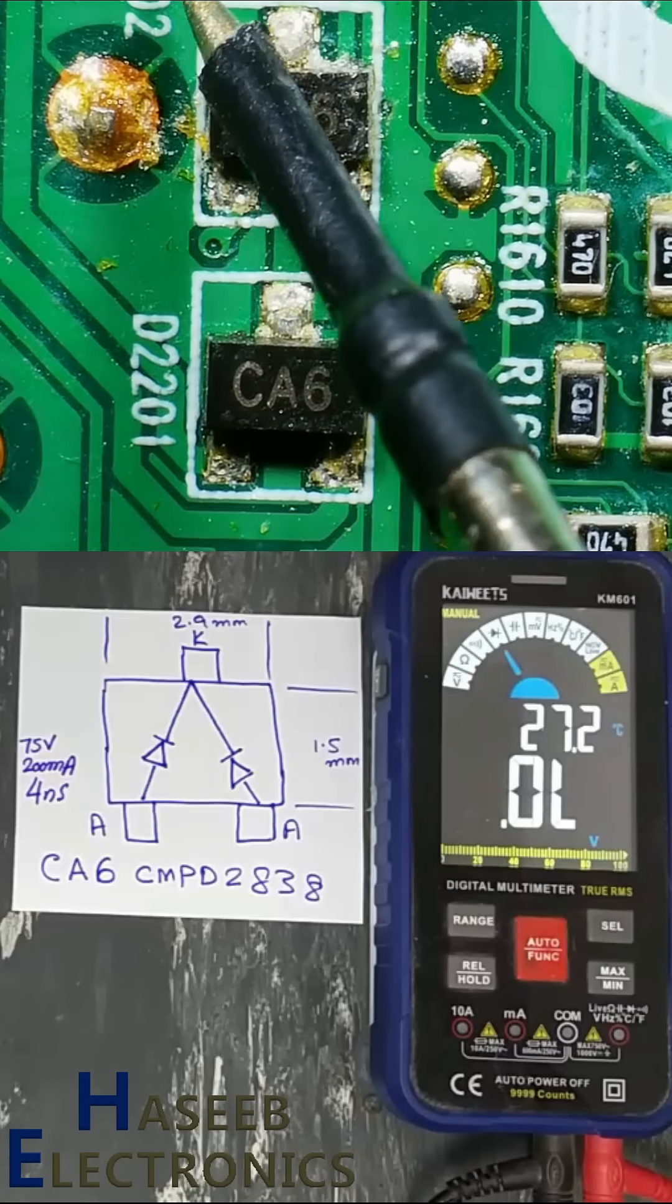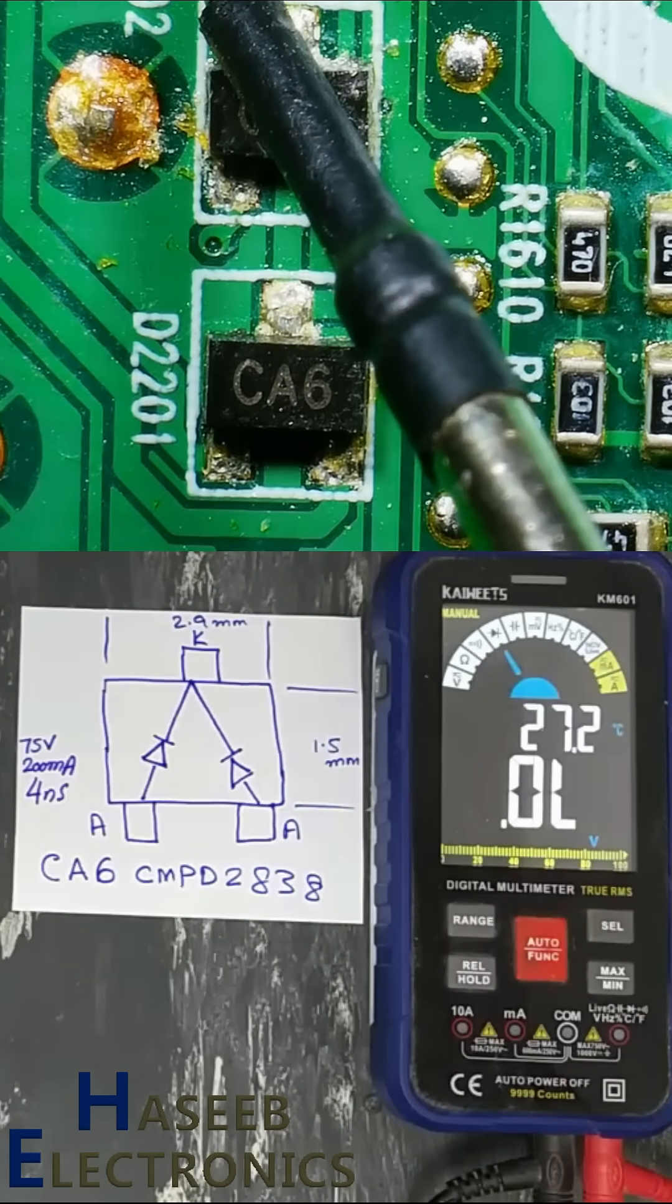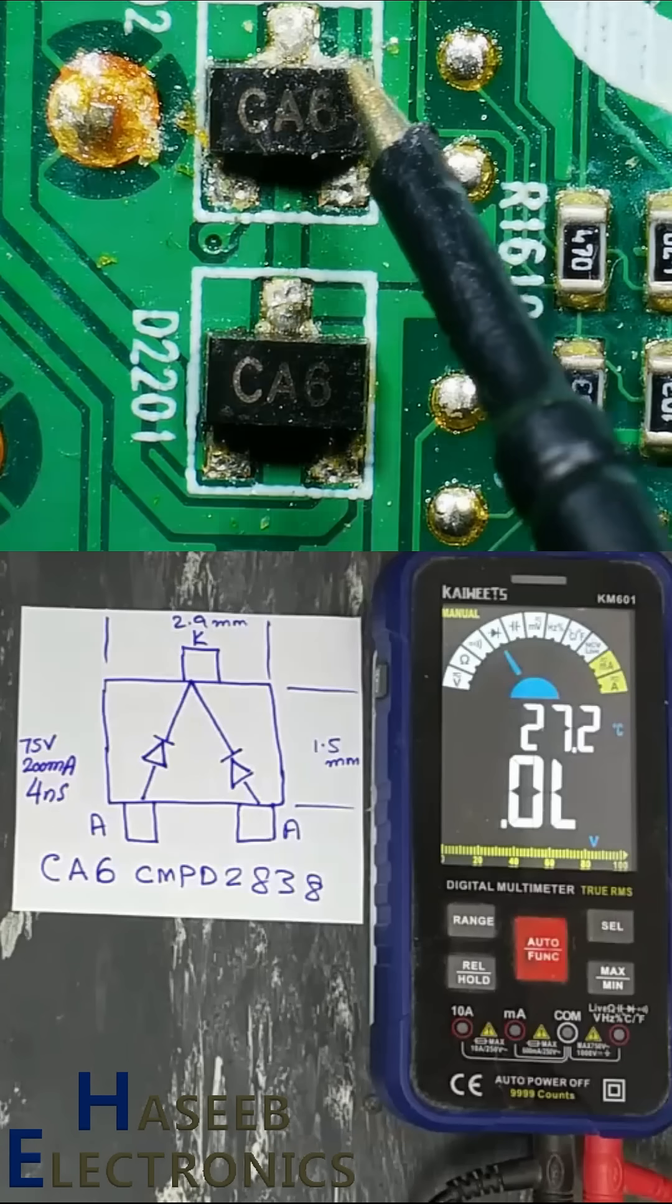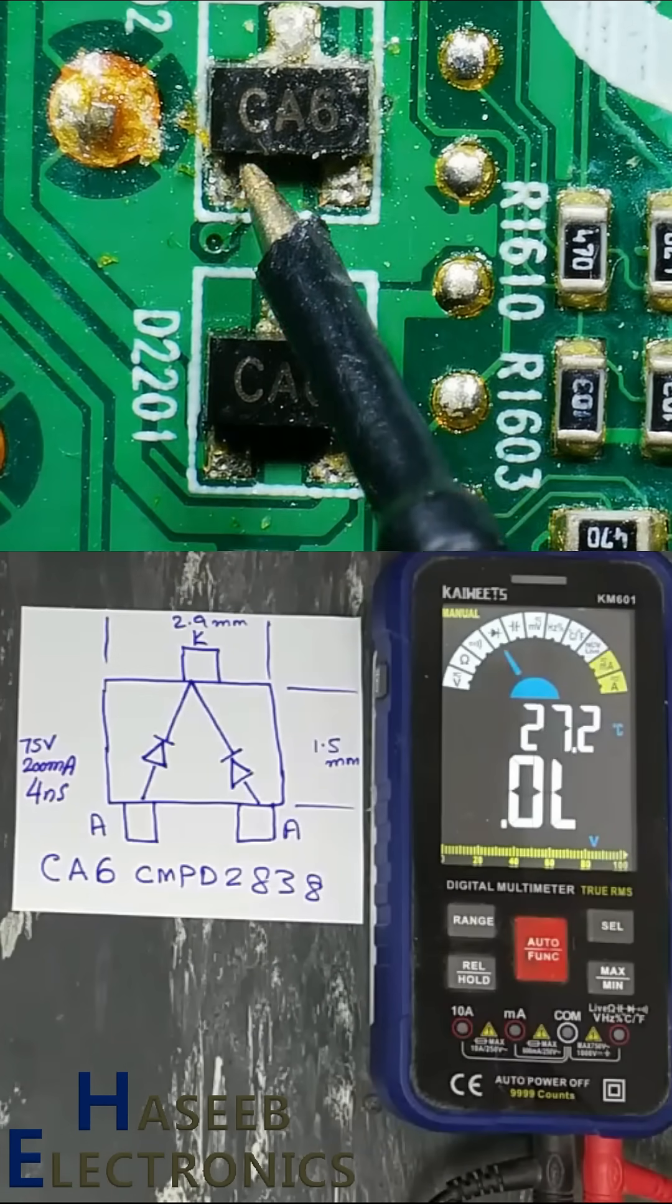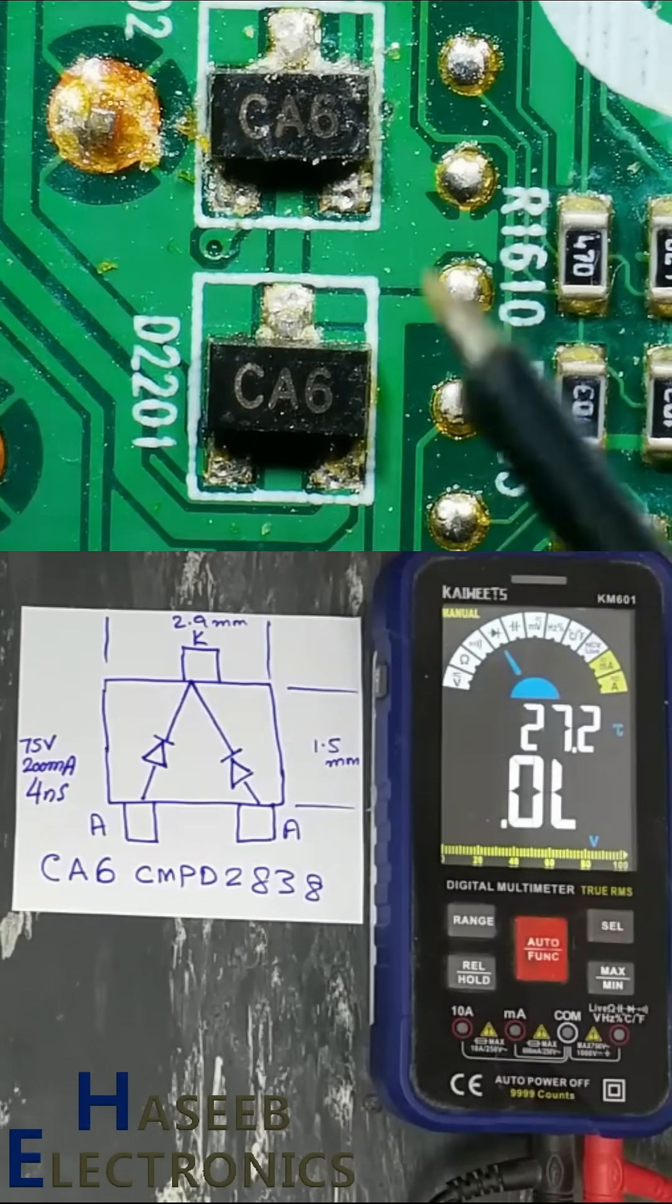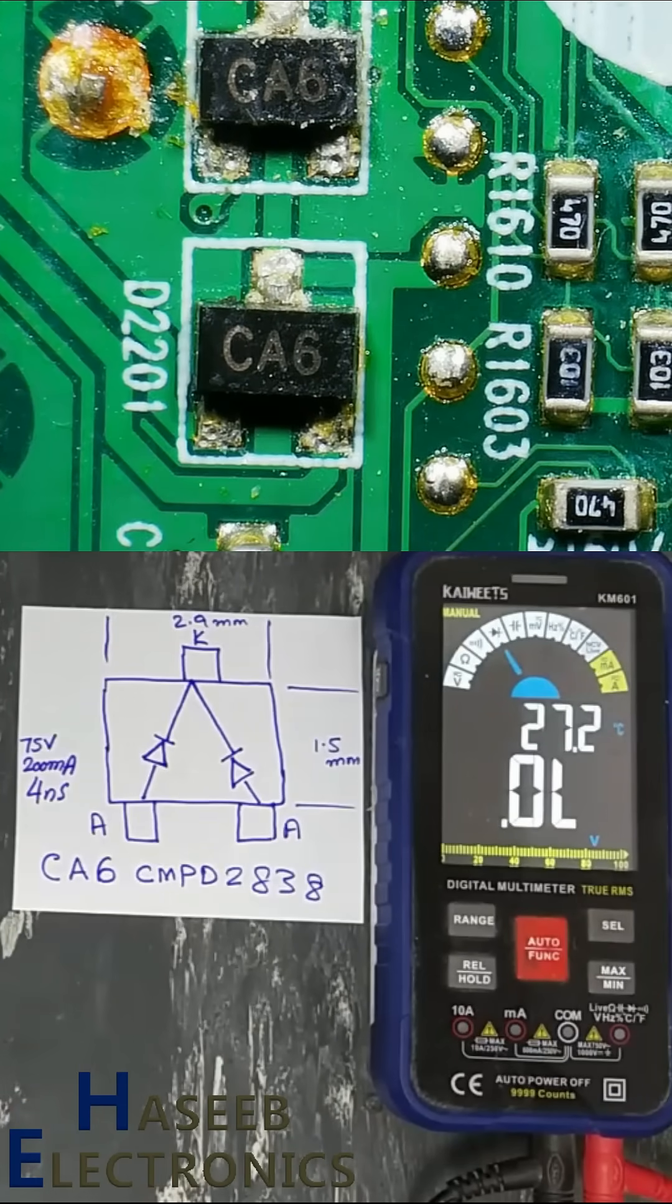CA6 marking code component ID indicates it is a diode, 2.9 millimeter length, 1.5 millimeter width, SOT23 package. When we check its datasheet using SMD unit.